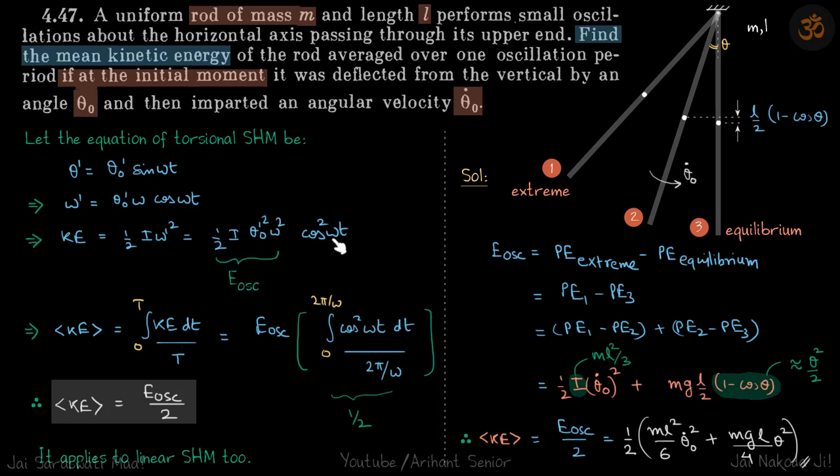So now if you want to find the average kinetic energy over one time period, we do ∫KE dt over T. So limits of time is from 0 to T. This E_oscillation is a constant, we'll take it out and we'll get this quantity.